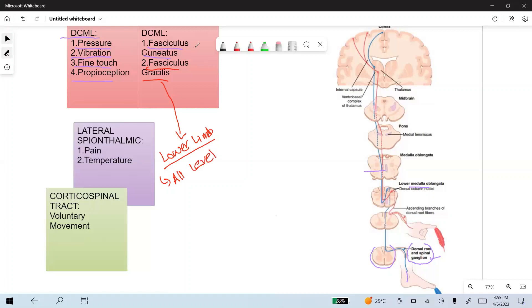While fasciculus cuneatus are the axons that carry the sensory sensation from the upper limb, and these fasciculus cuneatus are present at cervical and upper thoracic level of the spinal cord.